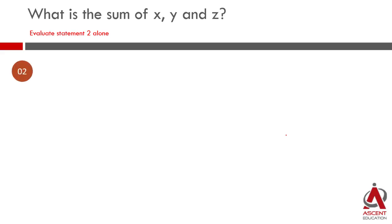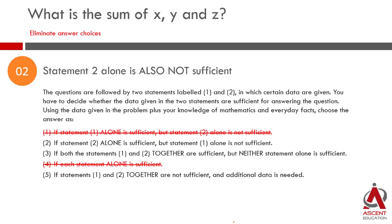Let's look at statement 2. We will evaluate statement 2 alone. We are not going to look at the two statements together. What is statement 2? x plus 2y is equal to 30. This gives the value of x plus 2y. Z is not there. We will not be able to find the answer using statement 2 also. So statement 2 alone is also not sufficient.